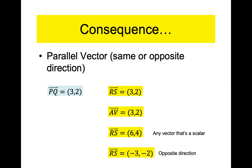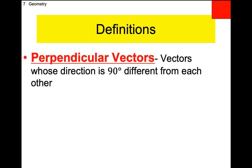Perpendicular vectors work the same as with normal lines — it's the opposite reciprocal. When you look at their slopes, you'll see they are opposite reciprocals of each other.